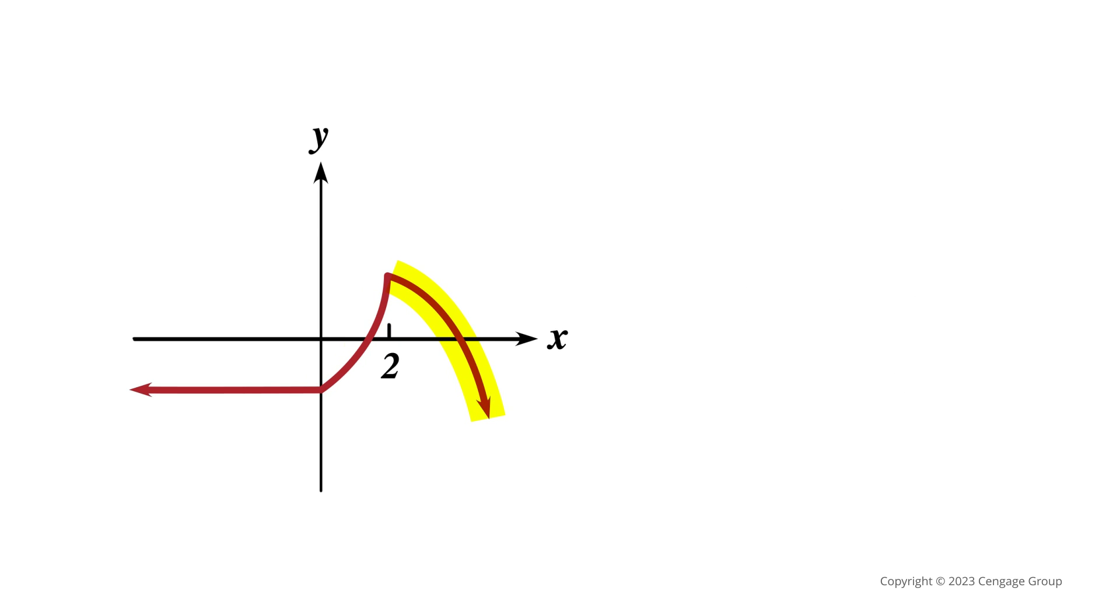On this last interval, the values of the function decrease as x increases. So we say the function is decreasing for x values that are greater than 2. In interval notation, we write 2 comma infinity.